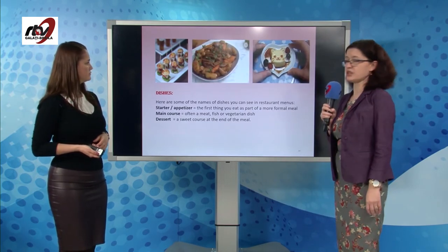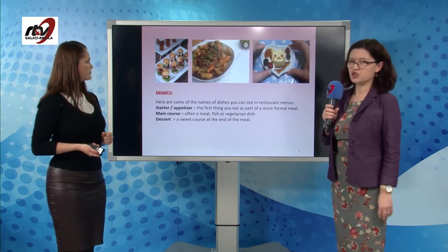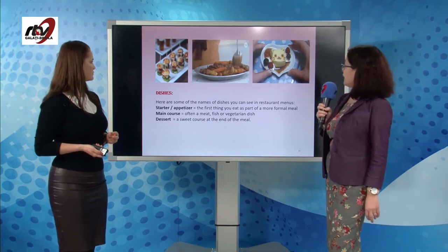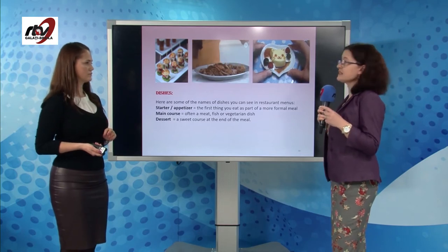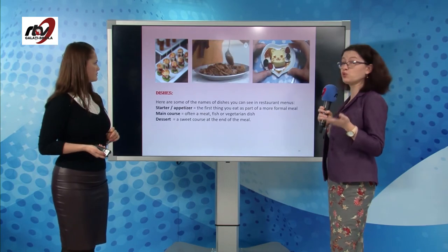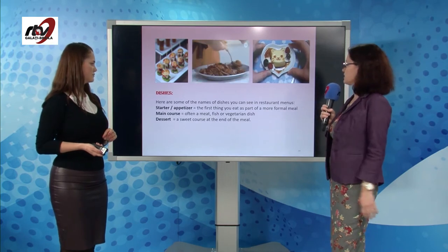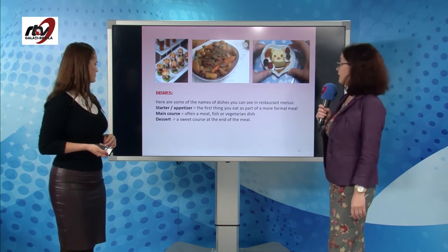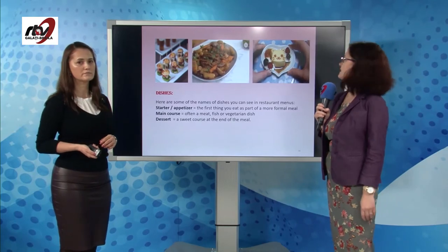There are different types of dishes. When we're talking about lunch, which is the biggest meal of the day, we can have starters or appetizers — the first thing you eat, which in Romanian is felul 1, where we eat soup. Then we have the main course, often meat, fish or a vegetarian dish — felul 2 or felul principal. Then we have the dessert, a sweet course at the end of the meal.